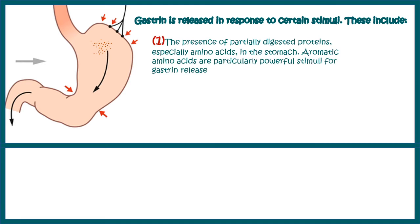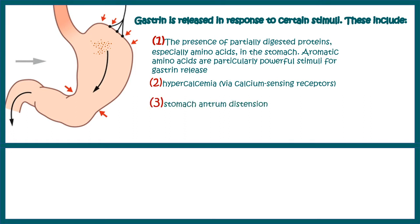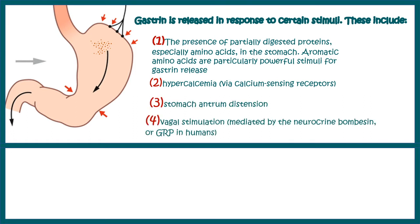The first stimulus that promotes gastrin secretion is partially digested proteins and amino acids, especially aromatic amino acids such as tyrosine, phenylalanine, and tryptophan. Secondly, hypercalcemia can increase gastrin secretion. Stomach distension and vagal nerve stimulation also have a positive effect on gastrin secretion.